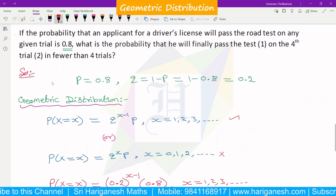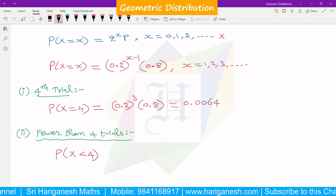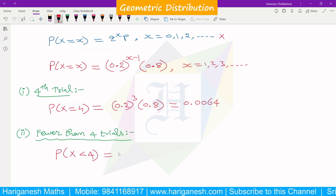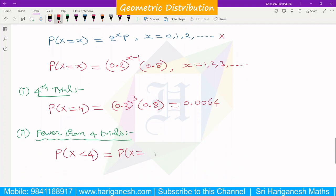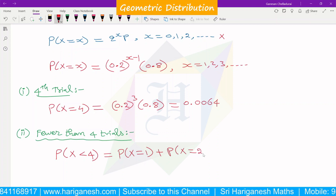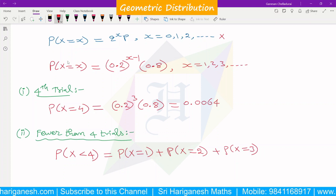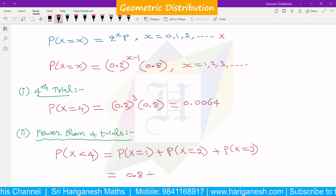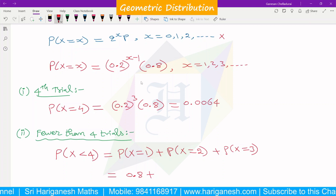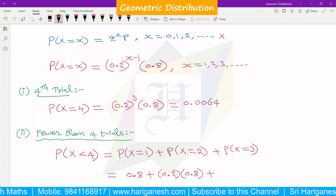The next question is: fewer than 4 trials. Fewer than 4 trials means x is less than 4. So, P(x < 4) equals P(x=1) plus P(x=2) plus P(x=3). This is 0.8 plus, when x equals 2, we have 0.2 to the power 1 times 0.8, plus when x equals 3, we have 0.2 squared times 0.8.